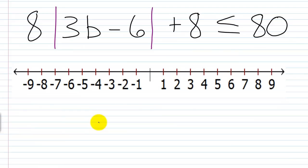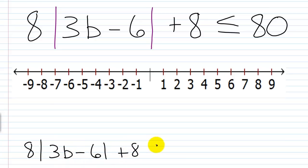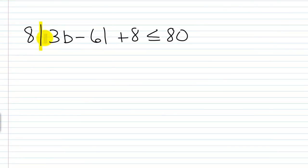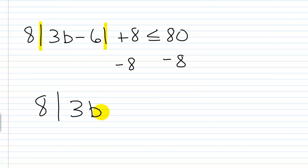Here we have 8 times the absolute value of 3v minus 6 plus 8 is less than or equal to 80. My first step is always to isolate the absolute value part. I want the absolute value operation by itself on one side. Here we have a less than or equal to, so I'm going to subtract away 8 to start. I'll get 8 times the absolute value of 3v minus 6 is less than or equal to 72.